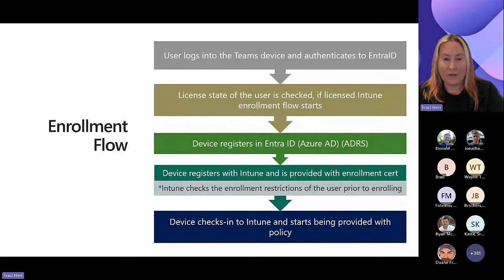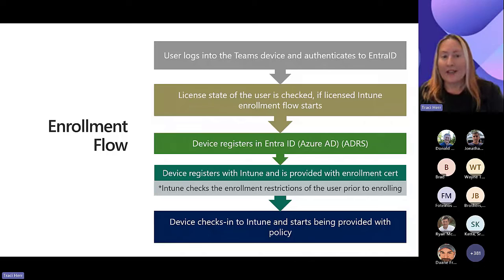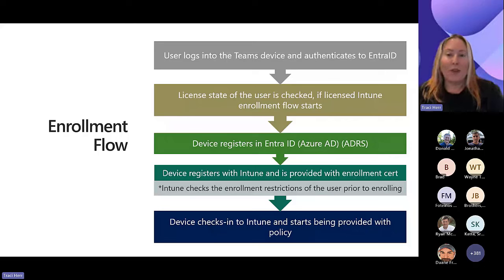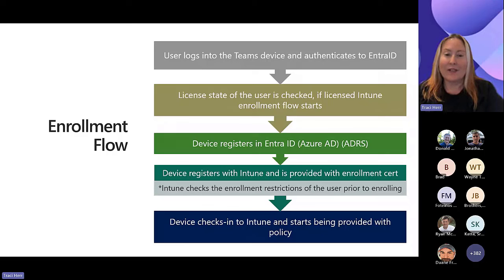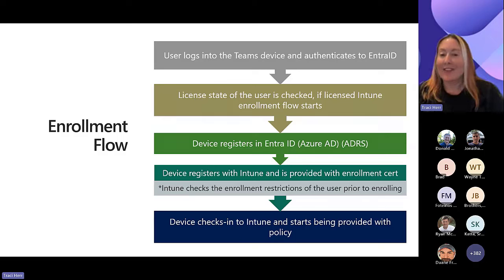Intune enrollment must happen first. When a user signs into the Teams device, we authenticate into Entra and check the license state — if a user has an E5 or other license bundle, we check if it contains an Intune license. We use the Azure Device Registration Service to register into Entra, creating that device object. Then we register with Intune and Intune provides an enrollment certificate. During this, Intune checks the enrollment restrictions — the enrollment restriction policy must allow Android Device Administrator, otherwise we get blocked.